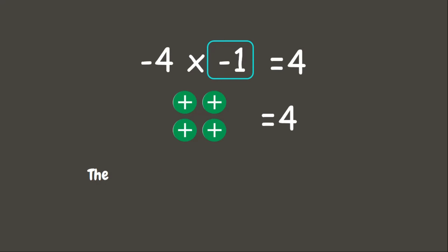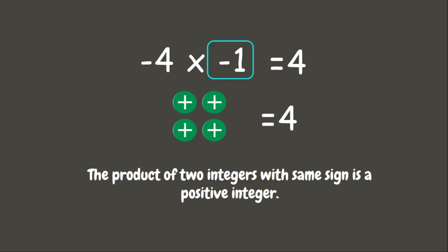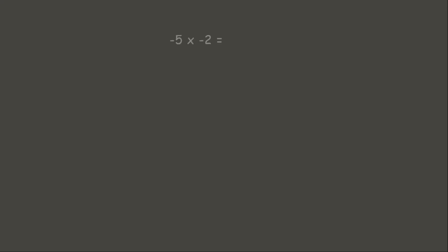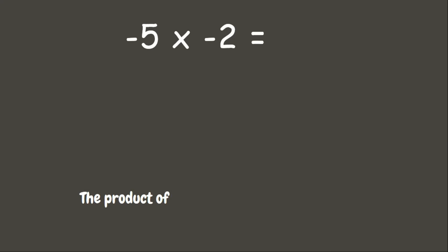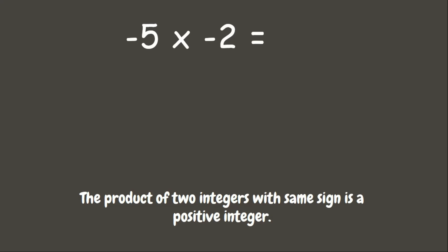Good job. If you have noticed, the product of two integers with the same sign is always a positive integer, whether they are both negatives or both positives. Now let us try some more — let's try to multiply integers without using our counters. First one, we have here negative 5 times negative 2. We need to remember that when we are multiplying two integers with the same sign, the answer is a positive integer. Since these are both negative integers, we simply multiply them.